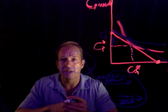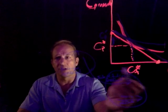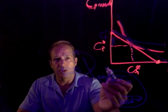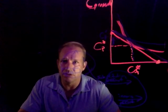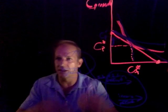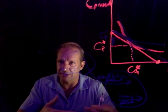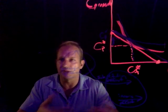If the income effect is extraordinarily dominant, future consumption could actually fall. What that would have to mean would be that future consumption is an inferior good, because with this newfound income, the higher interest rate, they purchase less of it. And that's not very plausible, but it's not impossible.